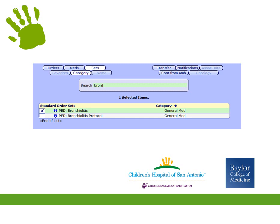To find the bronchiolitis admission order set, click on Sets on your order page, start typing bronchiolitis in the search box, and then select the PED bronchiolitis order set. The other option is only the protocol orders, not the full admission orders. There are many orders in the set that are needed.